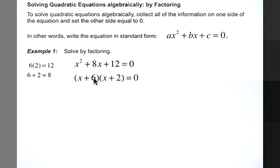So x plus 6 is our first factor, and x plus 2 is our second. So this means that x plus 6 is equal to 0, or x plus 2 is equal to 0.